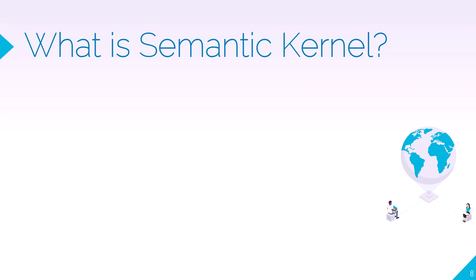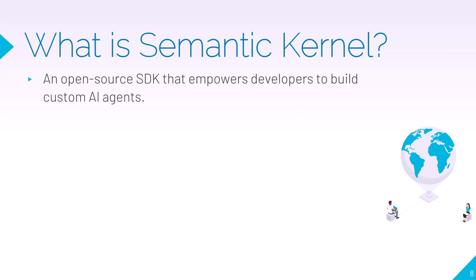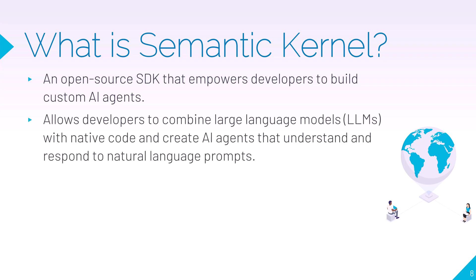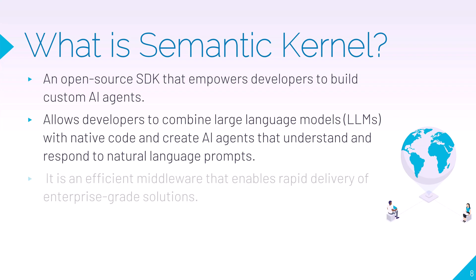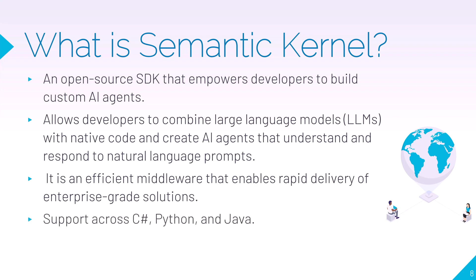Let us jump into the main topic of why we're here: the Semantic Kernel. The Semantic Kernel is an open source SDK that empowers developers to build custom AI agents. It allows developers to combine LLMs with native code and create AI agents that understand and respond to natural language prompts. It is an efficient middleware that enables rapid delivery of enterprise-grade, AI-powered solutions, with support across C#, Python, and Java.